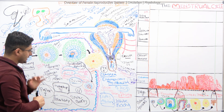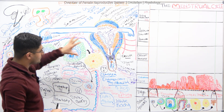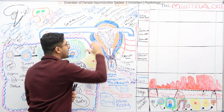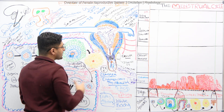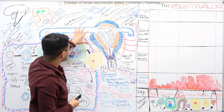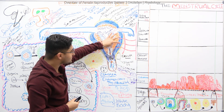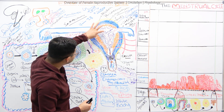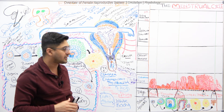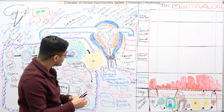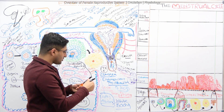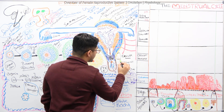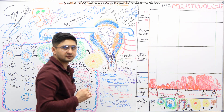Now we need to discuss the menstrual cycle — what is happening with hormone levels and the endometrium. The uterus has different layers: the outermost is the perimetrium; the middle layer with smooth muscle cells is the myometrium, where oxytocin works during parturition; and the inner layer is the endometrium. The endometrium has two layers — the stratum basalis and the stratum functionalis.